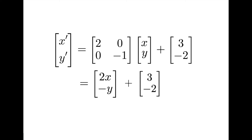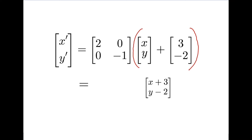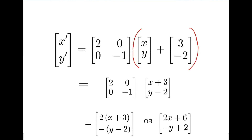Now consider this change to the equation. By the order of operations, the addition in this bracket must now occur before the multiplication, so the translations now occur before the dilation and reflection. To find the image point we add the matrices in the bracket to get x plus 3, y minus 2, and then perform the multiplication to get our image point 2x plus 6, minus y plus 2. Introducing the brackets changed the order of transformations and also produced a different image point.